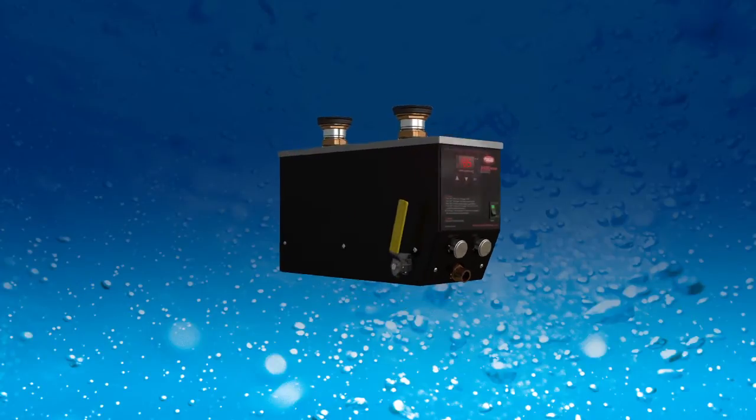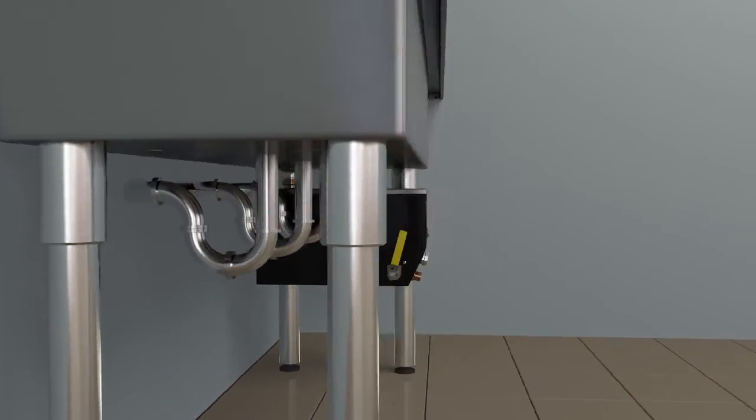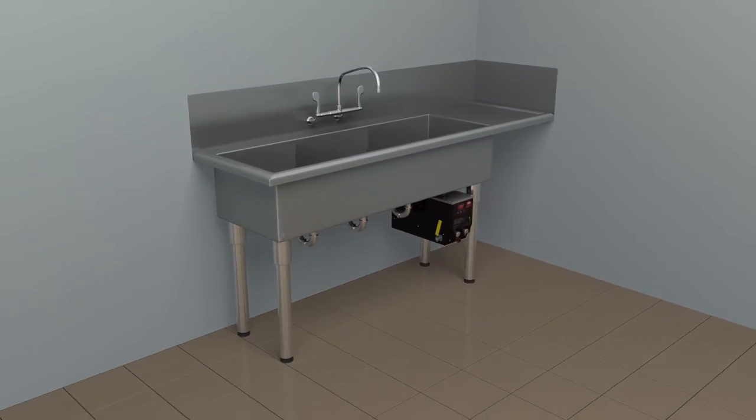Designed to fit under the center of the sink, HATCO 3CS2 is perfect for three or four compartment sinks, pots and pan sinks, and bar sinks.